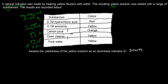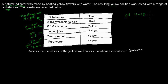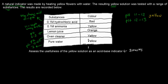Then you should look at the color changes and analyze them. For yellow, we had three things turn yellow: ammonia at pH 11 to 12, oven cleaner at pH 12 to 13, and pure water at pH 7. All three of those turned yellow.